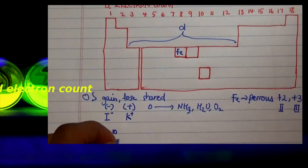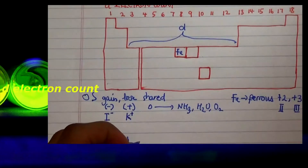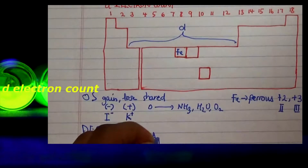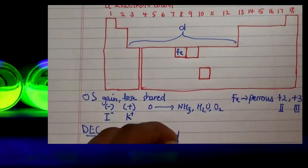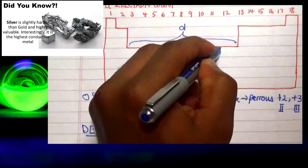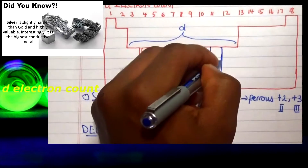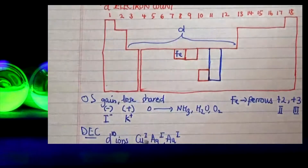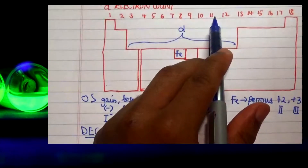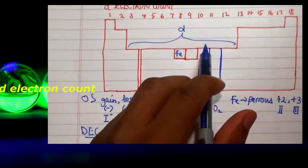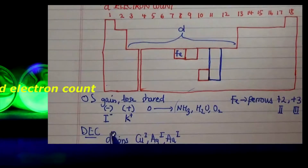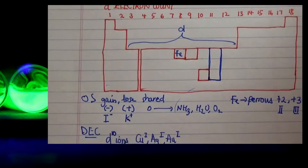For D10 ions — take note that I said ions — like copper(I), silver(I), and gold(I): all these are in the same group on the periodic table. What we notice is that these atoms have 11 electrons. When they lose one electron, they go from 11 all the way down to 10. So that is how the D10 count is derived.